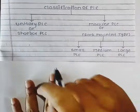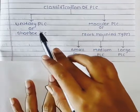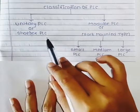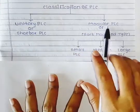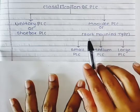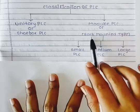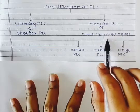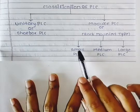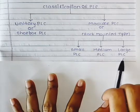In the classification of PLC, the first will be divided into two: that is the unitary PLC, also called as shoebox PLC. The second one is the modular PLC or rack-mounted PLC. These rack-mounted types will be divided again into three: that is the small PLC, medium PLC, and large PLC.